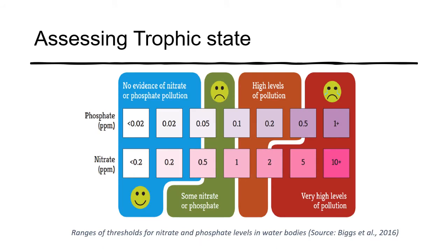In assessing the trophic state, we will be looking at concentrations of phosphate, nitrate, nitrite, and ammonia. Waters with a high level of pollution will have high phosphates and/or high nitrate, while waters with little evidence of pollution will have lower concentrations of phosphate and/or nitrate.